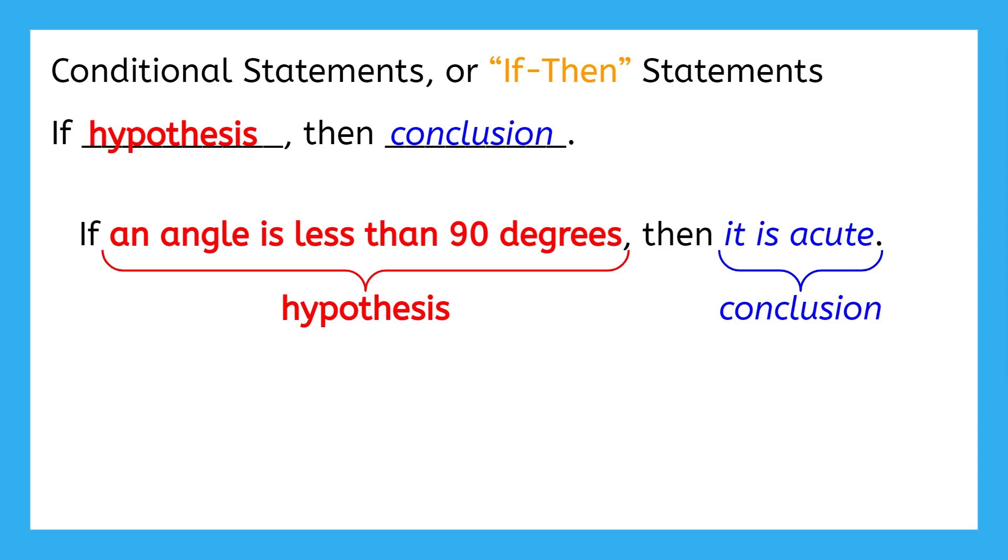Can you think of why this part of the statement might be called the conclusion? This should be something that we can conclude is true, based on the other half of the sentence. Let's read back through the statement again, this time paying attention to determine if the conclusion makes sense based on the hypothesis. Do I know that an angle is acute if I know that it is less than 90 degrees? Yes, that is definitely true.